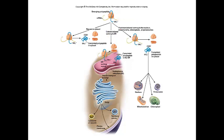The third pathway is post-translational sorting. Here the ribosome binds, translation begins and ends in the cytosol. However, that fully matured protein is then shuttled to one of the various organelles within the cell — the nucleus, mitochondrion, chloroplast in plants, or peroxisome. So we can see three very diverse pathways that proteins can take.